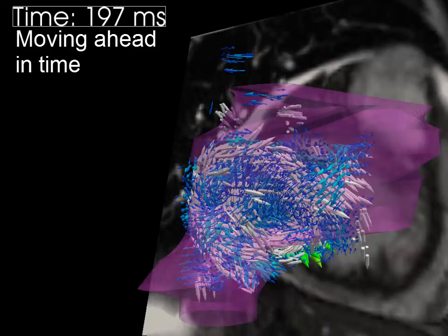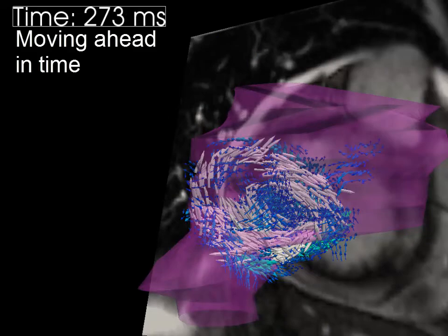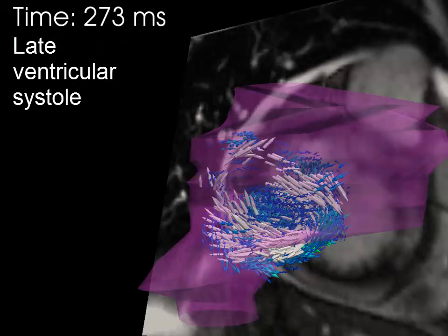Throughout the rest of systole, this regurgitant jet drives recirculating flow in the atrium.